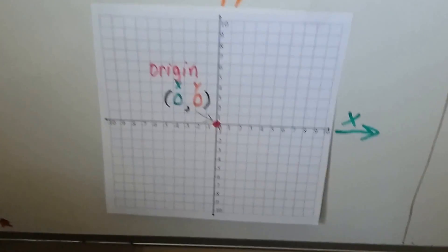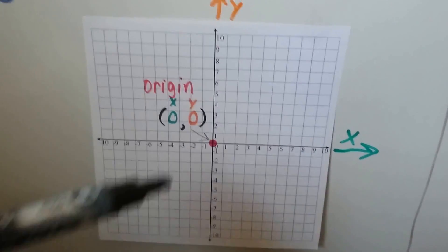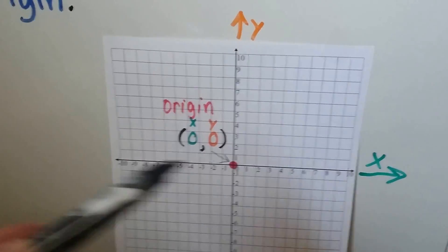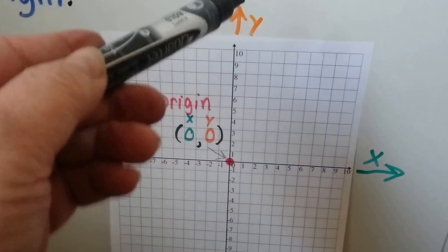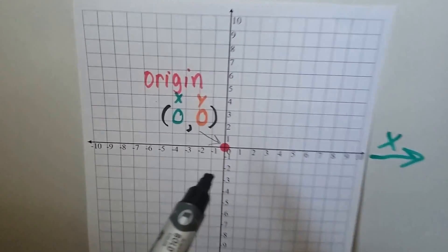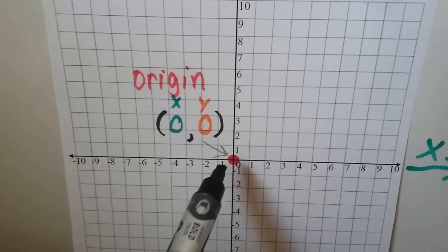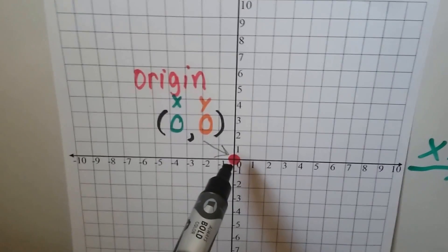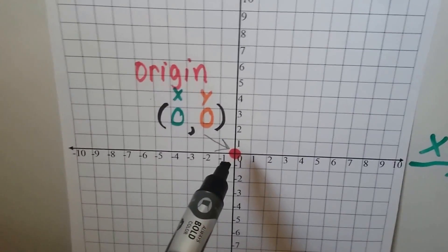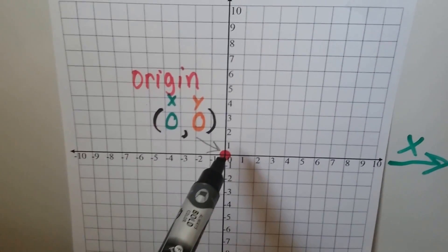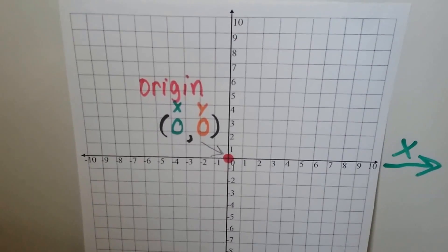So if you look at this, this is the coordinate plane, coordinate grid, and this is the x-axis. It's going horizontally. Here's the y-axis, it's going vertically. And you can see they meet where x is zero, between negative one and one. That's its zero mark. And for y, it meets between its one and negative one. So it meets at zero-zero, the origin.